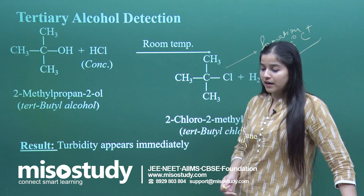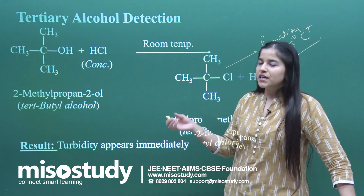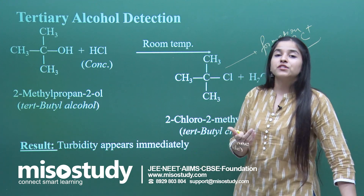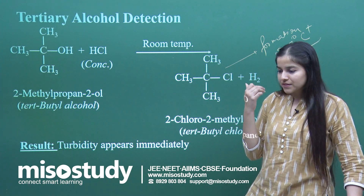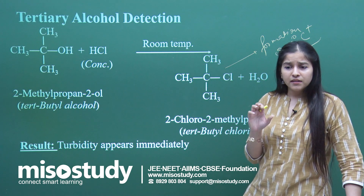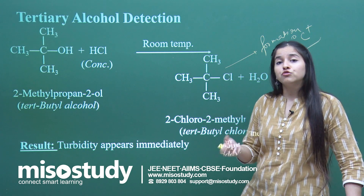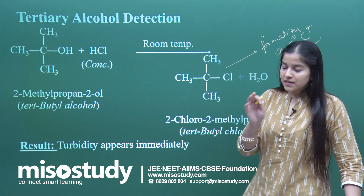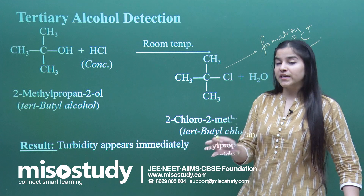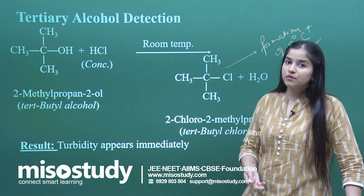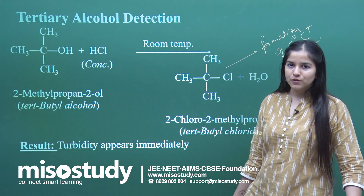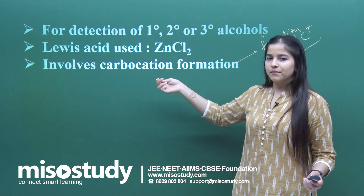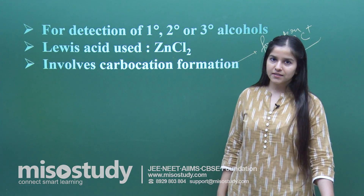So that is what the Groves process says — how to detect primary, secondary, and tertiary alcohol. If you do not know which alcohol is present, just add the reagents and observe how much time it takes for turbidity to appear. If turbidity appears in just 5 minutes, it is secondary alcohol. If there is immediate turbidity, it is tertiary alcohol. If turbidity appears very late and only after heating the reaction mixture, it is definitely primary alcohol. That was the Groves process — I hope everybody is clear. Have a nice day.